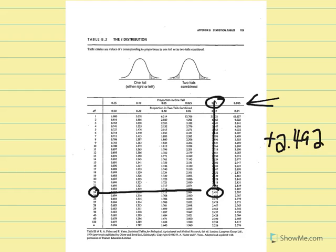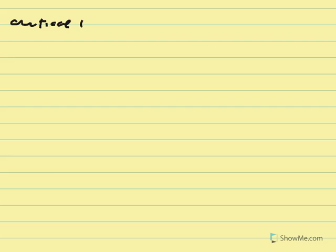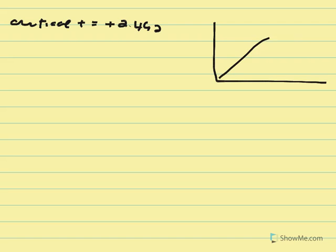Critical t is equal to positive 2.492. We set our critical region at positive 2.492. The null states the average difference between conditions equals zero. Our givens are: n equals 25, mean difference equals 1.6, and sum of square deviations equals 150.